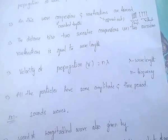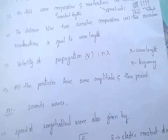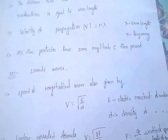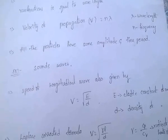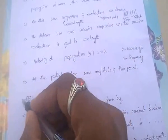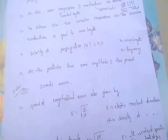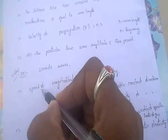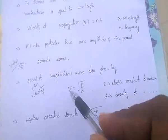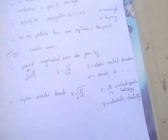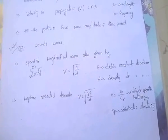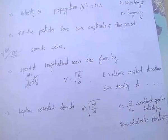The velocity of propagation of a longitudinal wave is v = nλ, where n is the frequency and lambda is the wavelength. All the particles have the same amplitude and time period. The example for longitudinal waves is sound waves. The speed of the longitudinal wave is given by v = √(E/d), where E is the elastic constant of the medium and d is the density of the medium.